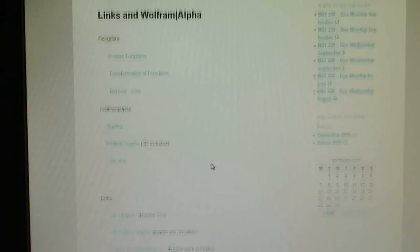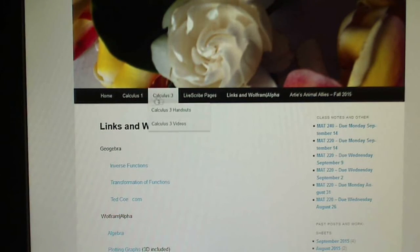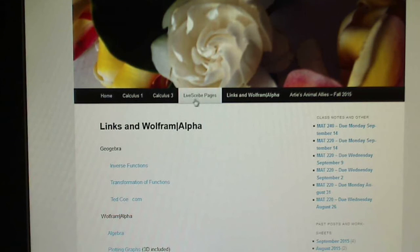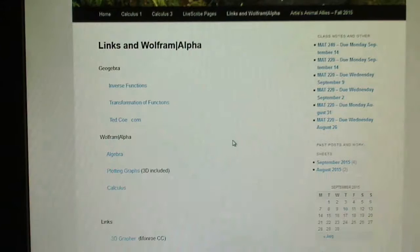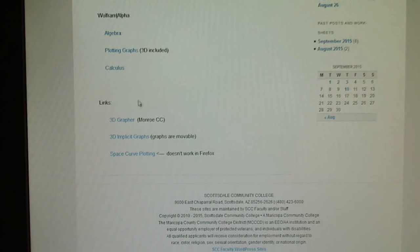If you're in my class, you can find it on my webpage. So, Calc 1, Calc 2, and then Links and Wolfram Alpha. Click on that one, and you'll go down to Links, 3D grapher, Monroe Community College. If you're not in my class, I'll put the link down underneath this video.